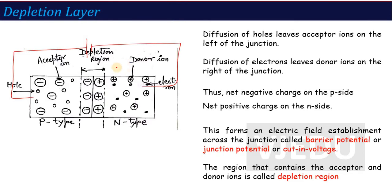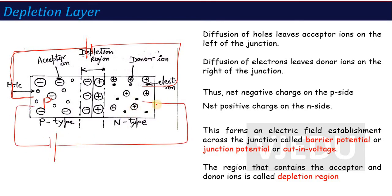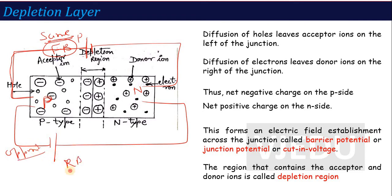What does this mean? If I connect the p-type to the positive terminal of the battery and n-type to the negative terminal — same polarity — this is called forward bias connection. And when the connection is opposite — n is connected with positive and p is connected with negative — this is called reverse bias connection.